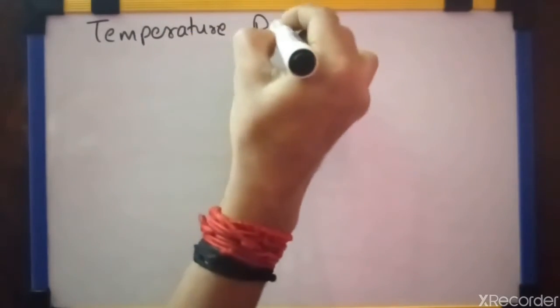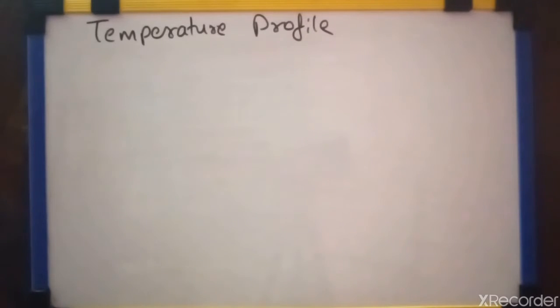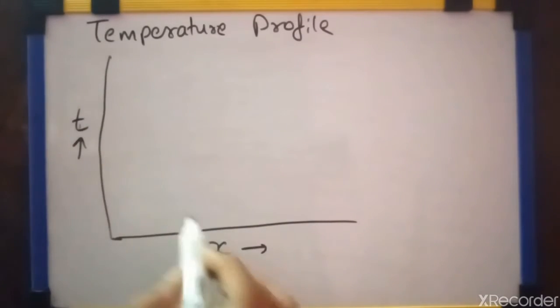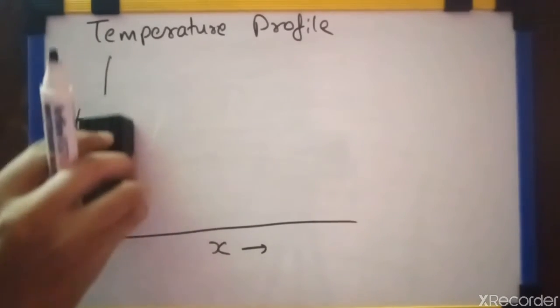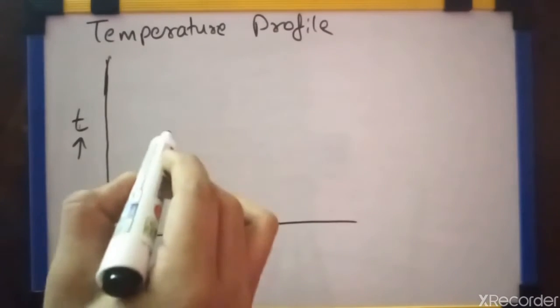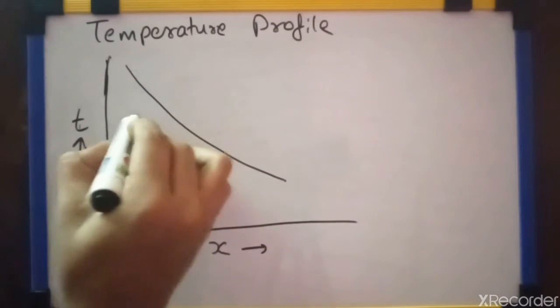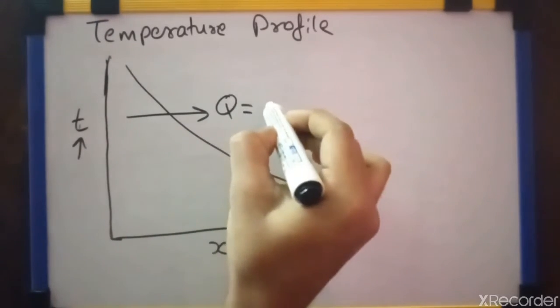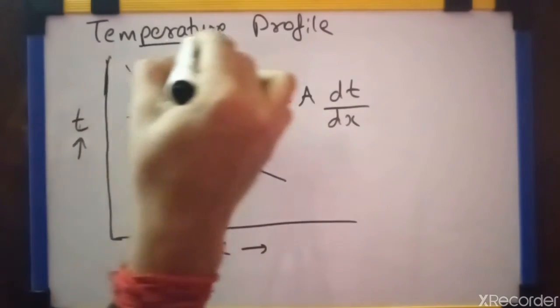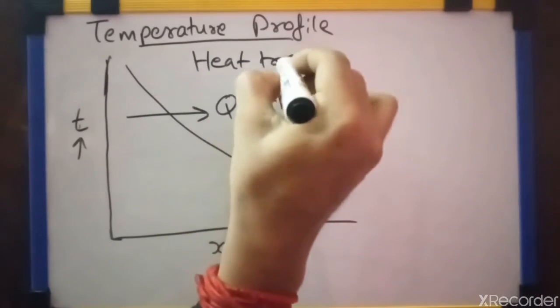In case of heat transfer, you have to draw a temperature profile diagram. It is in the x axis, distance x, and in the y axis, temperature T we are plotting. This curve gives the heat transfer. That is here, Q is equal to minus KA dT by dx. This is the temperature profile in case of heat transfer.